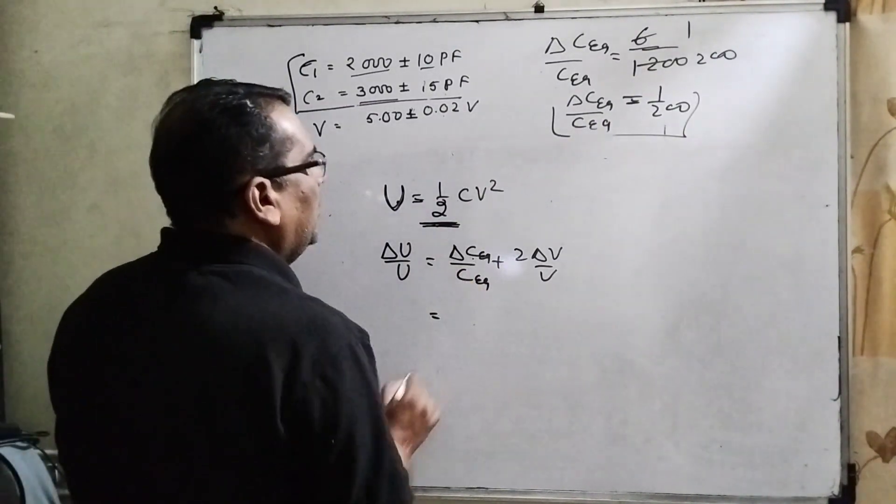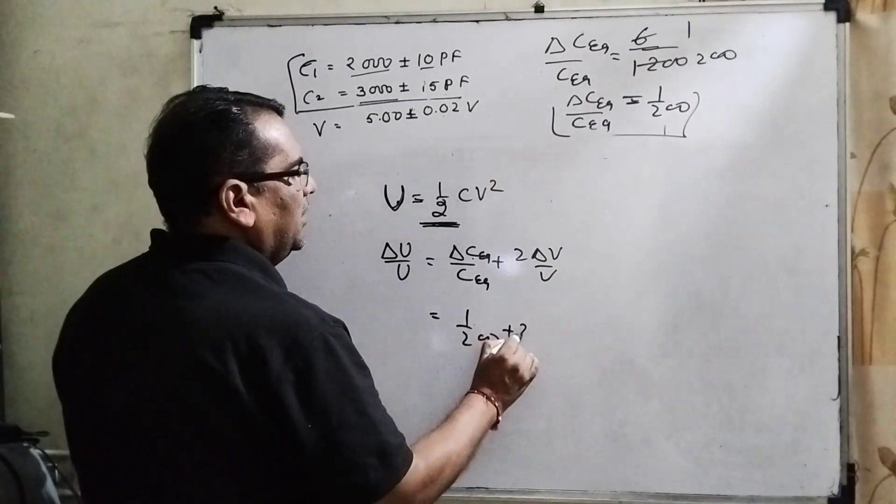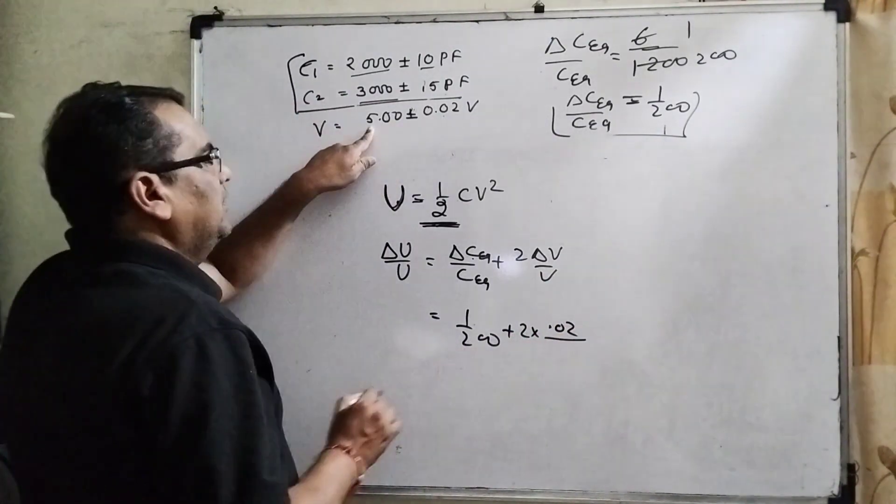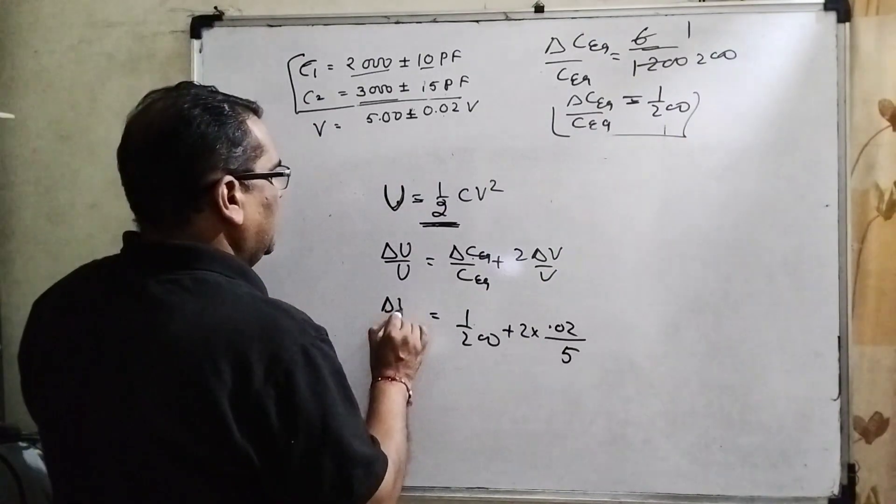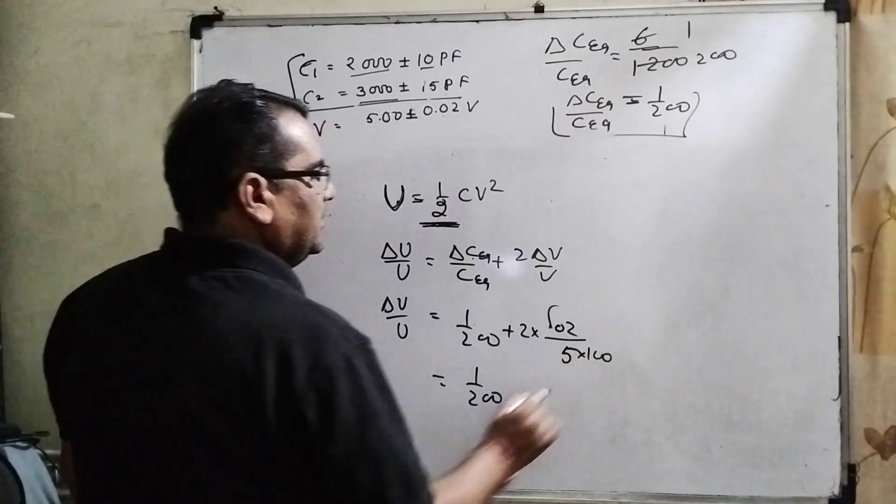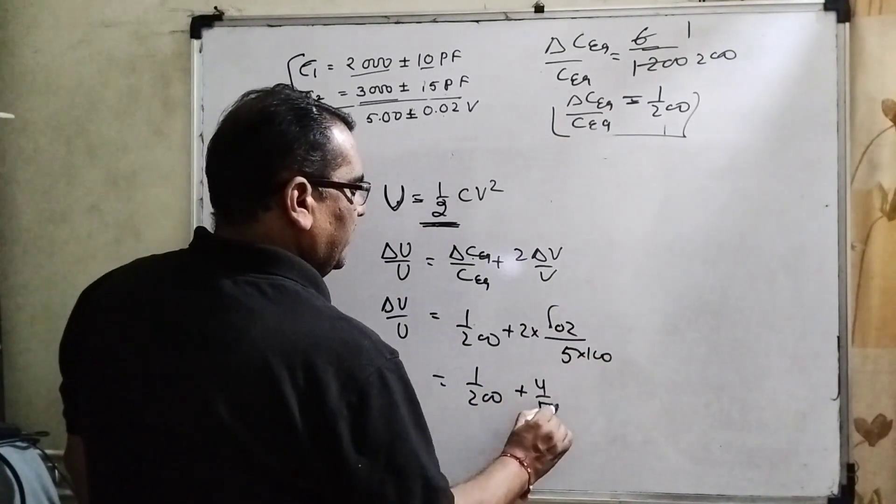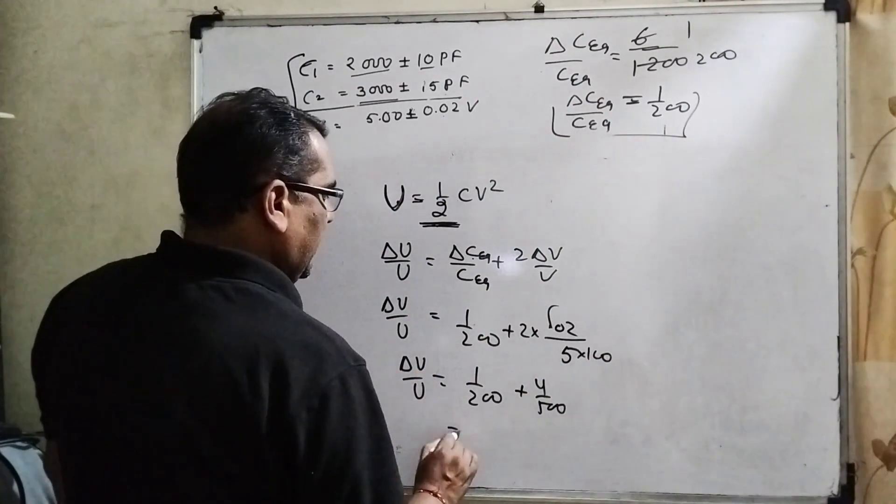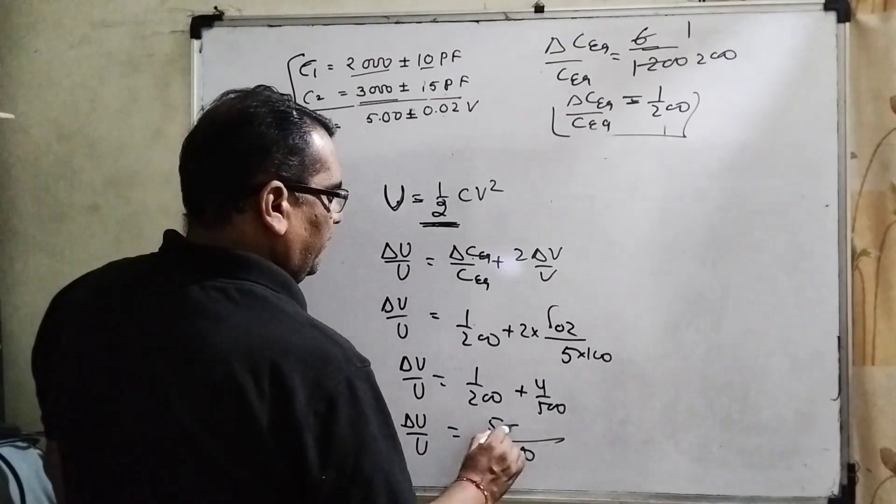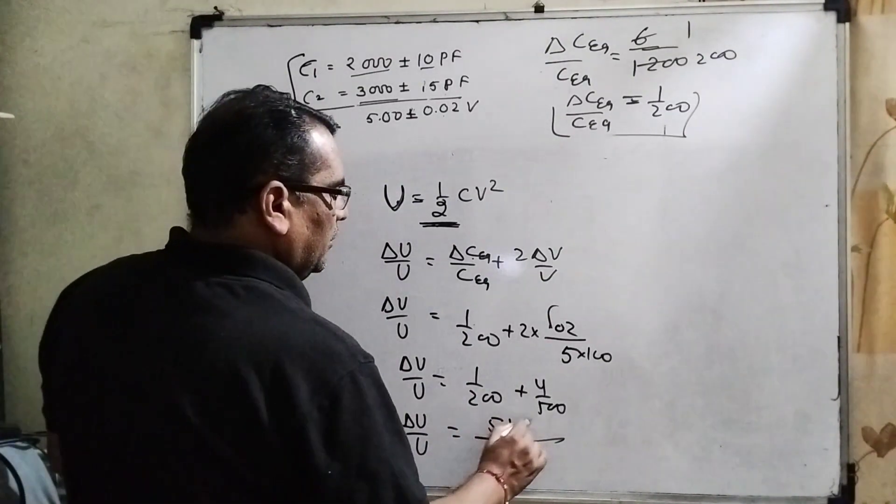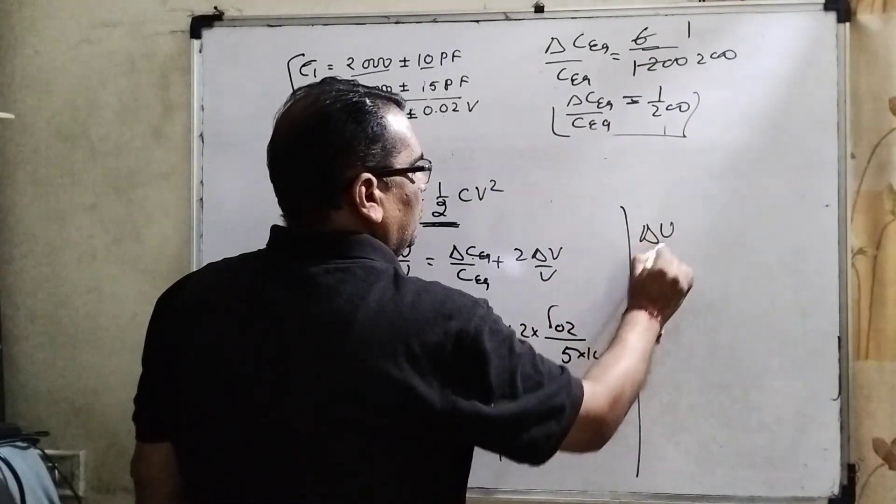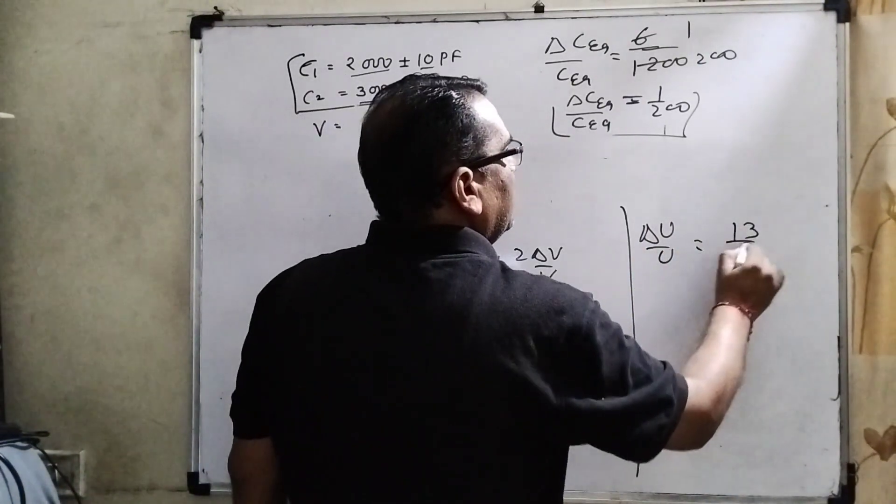So here what is the equivalent value? 1 by 200. And what is delta V? Delta V means error 0.02, and the real value is 5. Delta U by U: 1 by 200. This can be written as 100, 2 times 4 by 500. Taking the LCM 1000: 4, 8. Then delta U by U equals 13 by 1000.